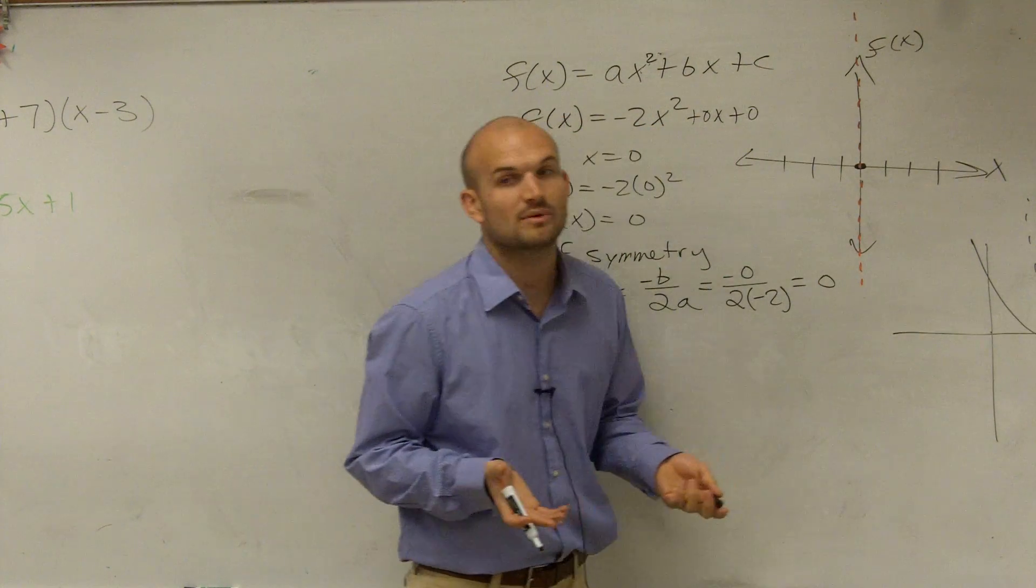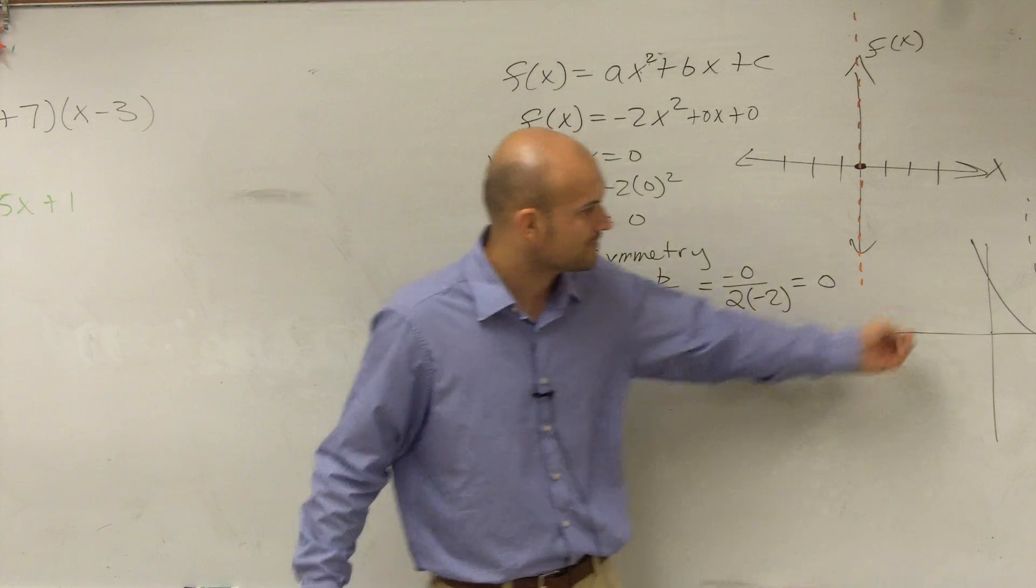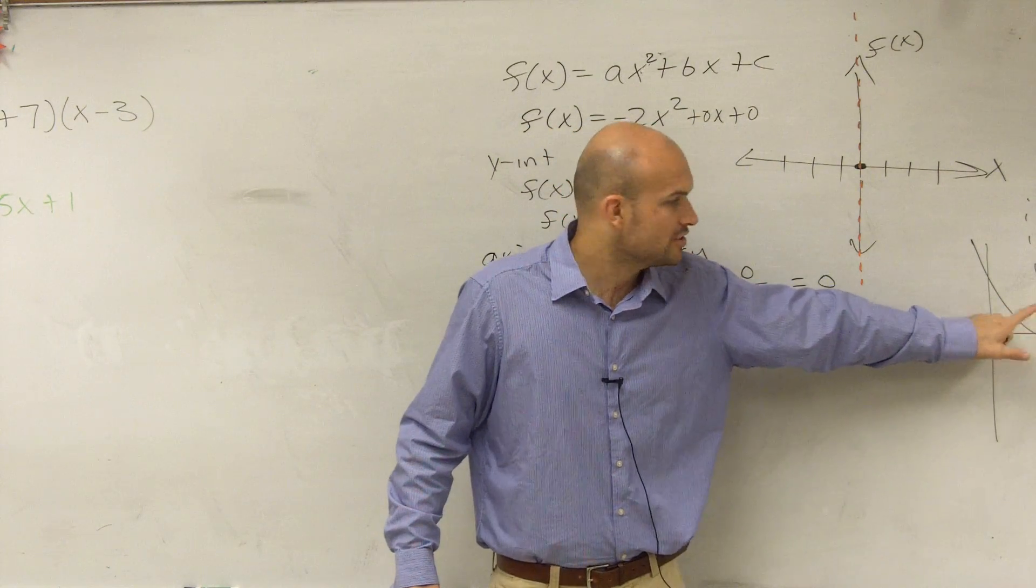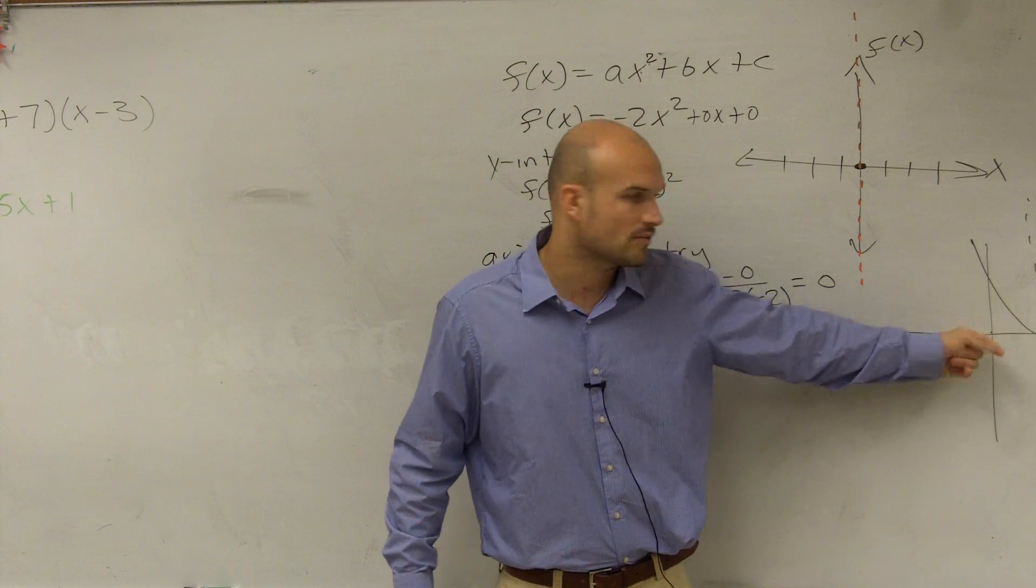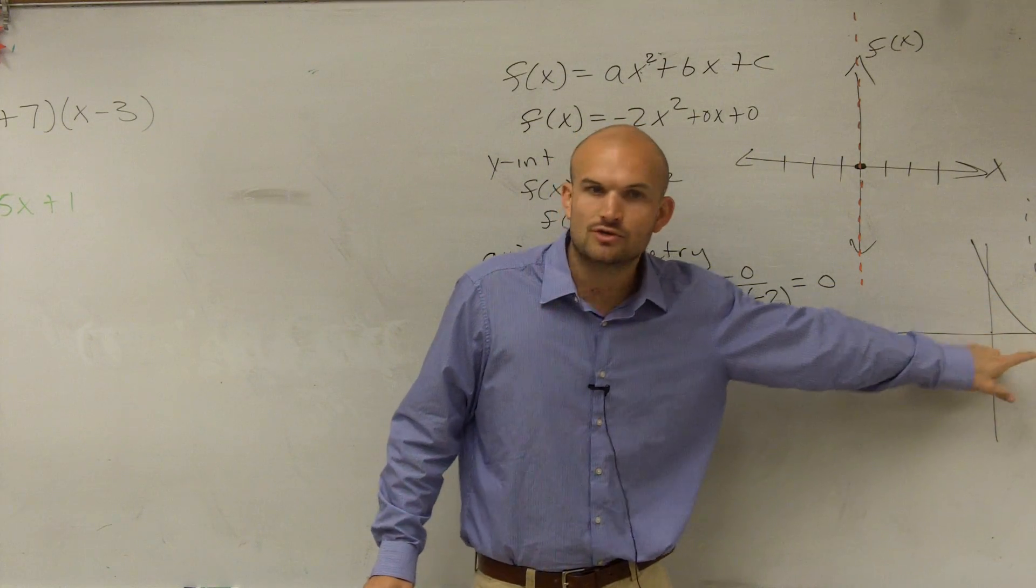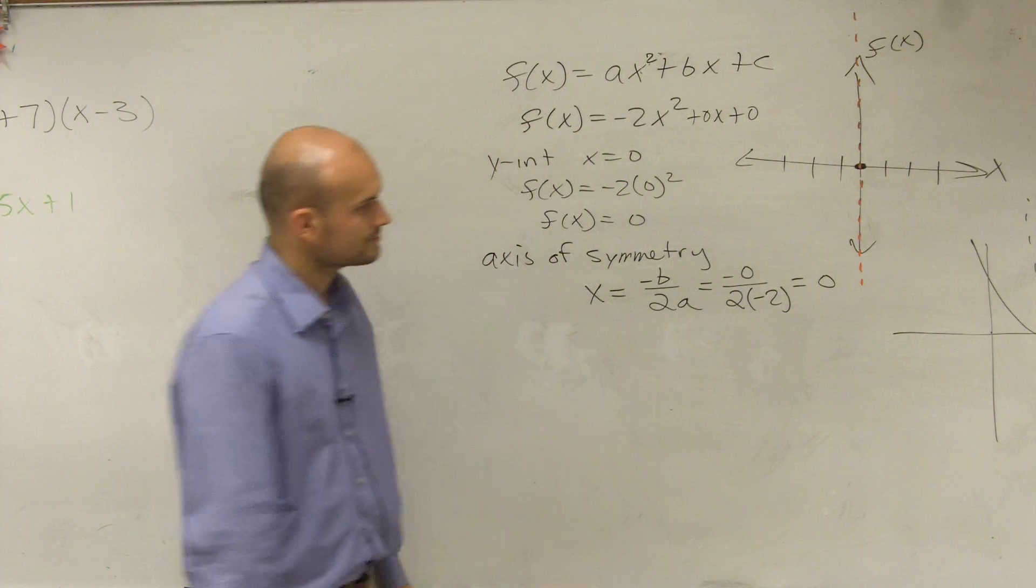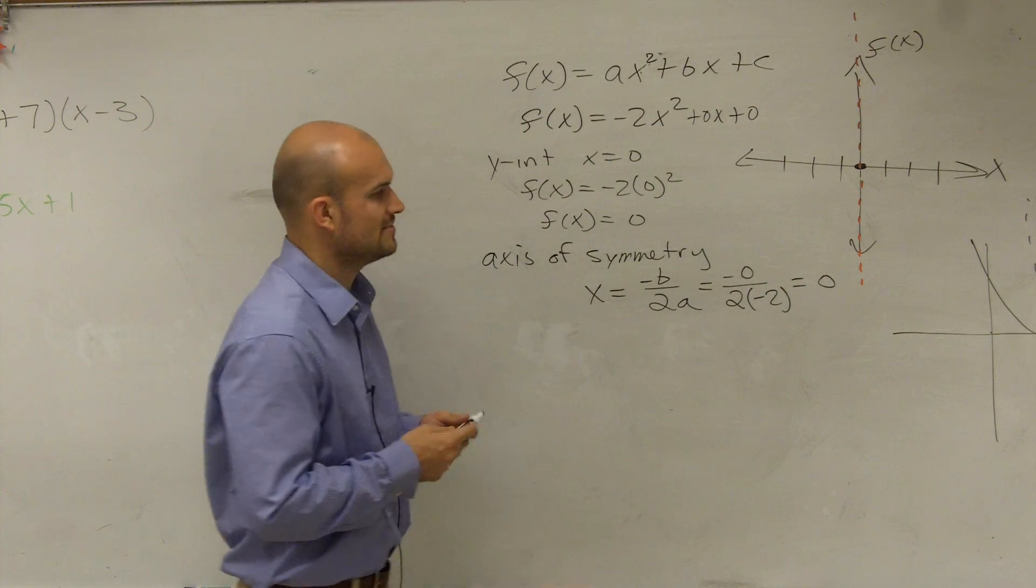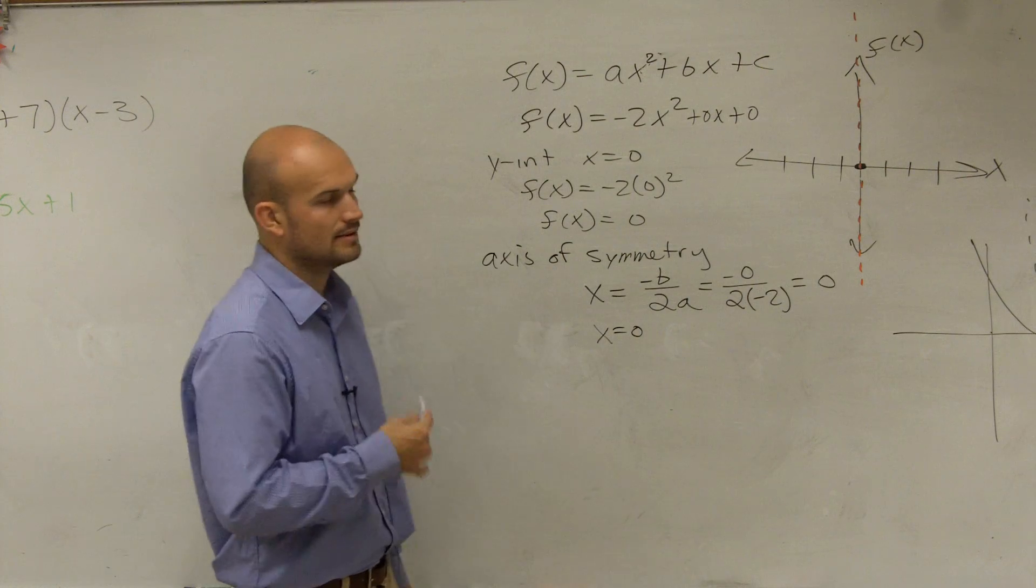Remember, first of all, we need to determine what the vertex is. The vertex is the maximum or minimum value of your parabola. Well, what you guys need to remember is your vertex goes through, or your axis of symmetry goes through your vertex. So therefore, when you find the axis of symmetry, you also just found the x value of your vertex. So my vertex in this case, or the x value of my vertex, is going to be at 0. So x = 0 is the x value of my vertex.